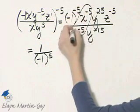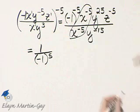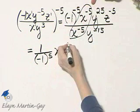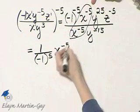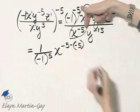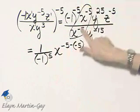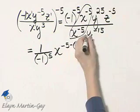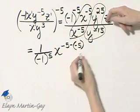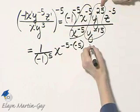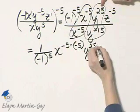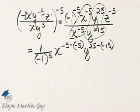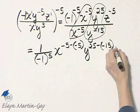Now, notice I have some like bases, so I'm going to use the quotient rule. This is that common base of x raised to the power of the numerator exponent minus the denominator exponent. By the way, you could also have seen that these two x factors are the same and divided out that common factor — we'll end up with the same thing. Here's a common base of y, so that's y raised to the power of numerator exponent 25, be careful, minus denominator exponent of negative 15. And then I have z to the negative 5, I'll just write that down.